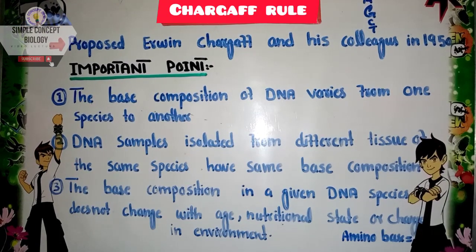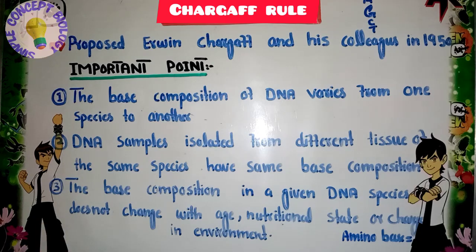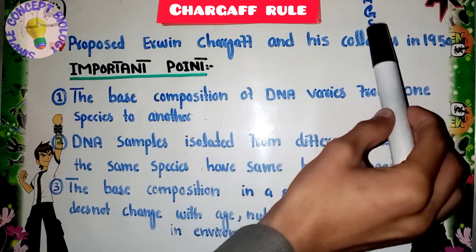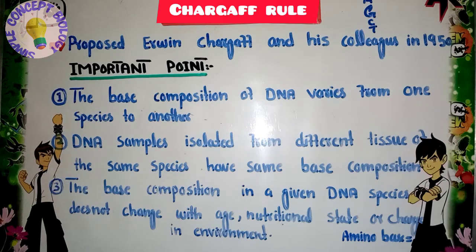Today we will talk about Chargaff's rules, which provided the basis for the work of Watson and Crick. Chargaff and his co-workers, during the period of 1949 to 1953, isolated DNA samples from different organisms. He studied the chromatographic method for separation and quantitative analysis of DNA. He concluded that DNA consists of four nitrogenous bases: adenine, guanine, cytosine, and thymine.